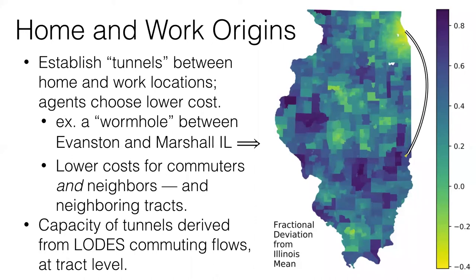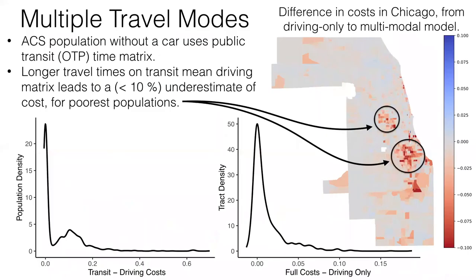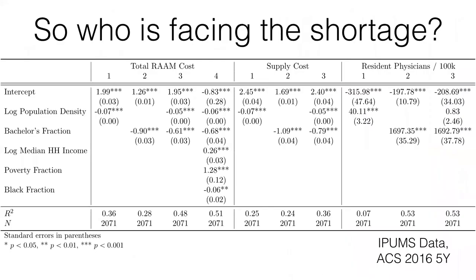We can use real LODES data for commuting flows — the difference is more subtle. With commuting flows it gives everyone a free ticket to work, reducing the extremes of the distribution. For cities we can incorporate multiple travel modes: using the ACS to assign populations with or without a car, those without a car are forced to use the more expensive public transportation network. In Chicago, the west side and south side — poorer populations — have higher costs. With just driving matrices you underestimate costs for the poorest populations, though differences are generally less than 10%.